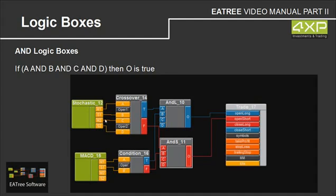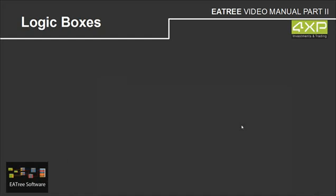On the other side, if the stochastics crossover is false, we connect it to AND short. And if MACD is false, we connect it to the B button of AND short. And if both are false, then we open short.